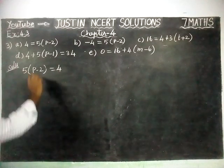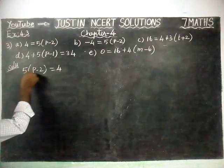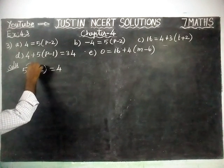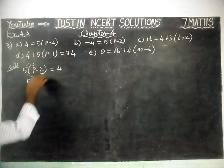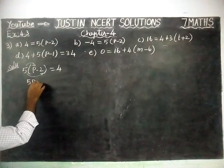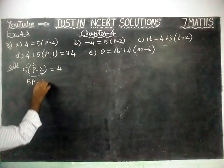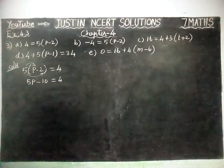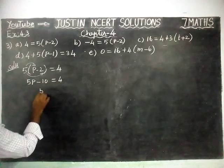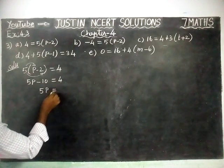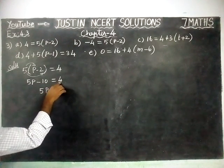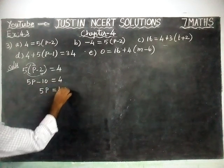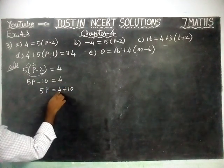I am going to multiply this 5 inside. 5 into P is equal to 5P, because this 5 is common for P also and 2 also. So 5 into P minus 5 twos are 10, is equal to 4. Now 5P is equal to 4. This minus 10 is going to the right hand side, so it will become plus: 4 plus 10.